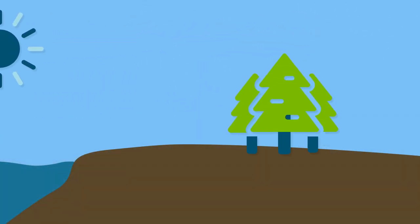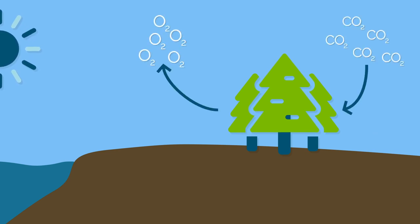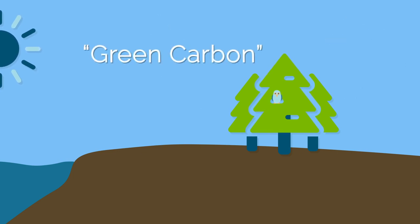Most of us are pretty familiar with the idea of green plants breathing in carbon dioxide and breathing out clean oxygen. A healthy forest can sequester tons of carbon every year in stems, leaves, and branches, something referred to as green carbon.